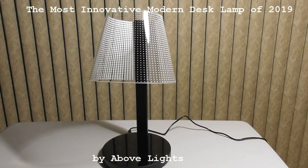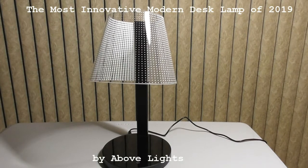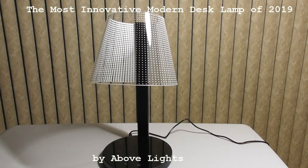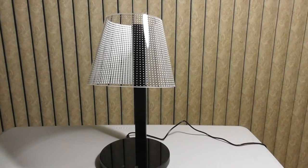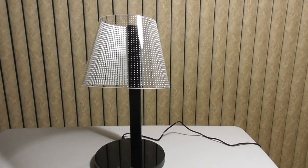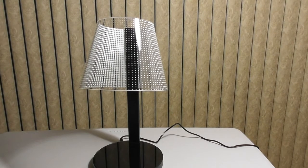This is going to be a product review of the LED table lamp made by Above Lights. The lamp is a 7 watt dimmable desk lamp that you can use on your nightstand, at work, at the office, at home, on the bathroom counter for applying makeup.